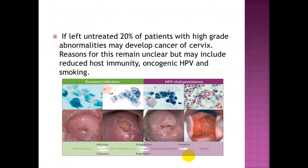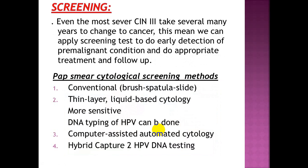Reasons why some progress to cancer may include reduced host immunity, oncogenic HPV, and smoking. Pap smear cytological screening methods include the conventional brush, spatula and slide, liquid-based cytology, and more sensitive DNA typing of HPV. Computer-assisted automated cytology and hybrid capture 2 HPV DNA testing can also be done.